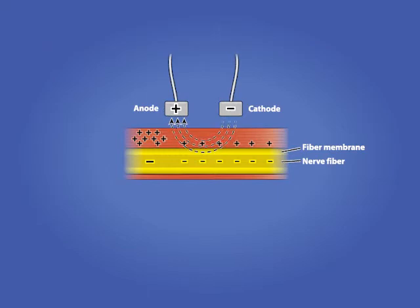In summary, the longer the pulse duration, the less intensity is needed to depolarize nerve tissues. To the contrary, the shorter the pulse duration, the more intensity is needed to depolarize nerve tissues.